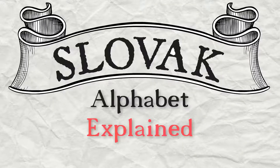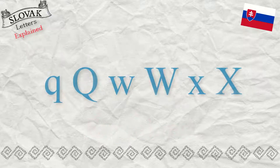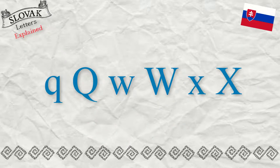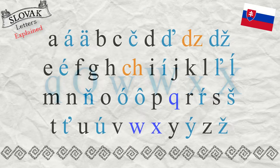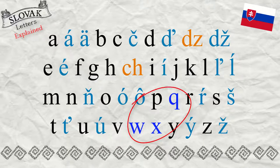Slovak alphabet explained. The letters Q, W, and X in the Slovak alphabet are used in foreign words or words adopted into Slovak.